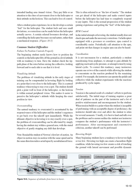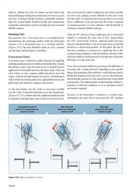Hovering Height. Many beginning students have a tendency to hover too high or too low. Hovering too high can create a hazardous flight condition, while hovering too low creates a risk of touching the ground with lateral movement and possible dynamic rollover. Abrupt aft cyclic movement can also lead to the tail guard/stinger striking the ground, and in worse cases, the tail rotor. To help avoid this problem, continually reinforce what the correct height should look like and continuously remind the student that a good scan helps prevent unwanted altitude changes.